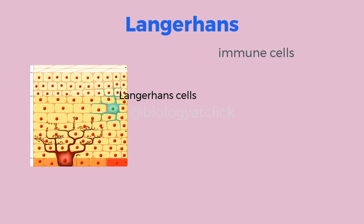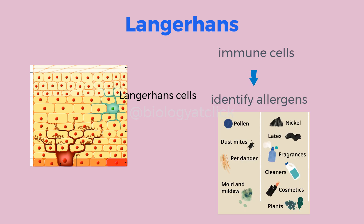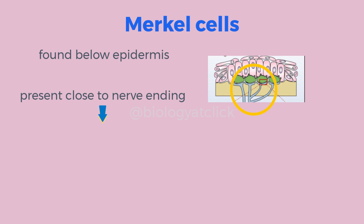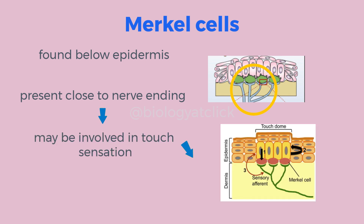Langerhans cells are immune cells found in the epidermis. They are responsible for helping the body identify allergens. A special type of cell found right below the top layer of the epidermis, these cells are very close to nerve endings that receive the sensation of touch and may be involved in touch; however, their exact function is not known.